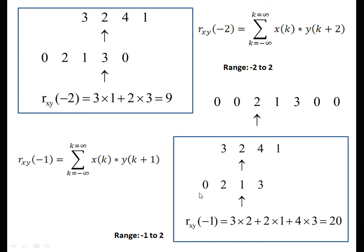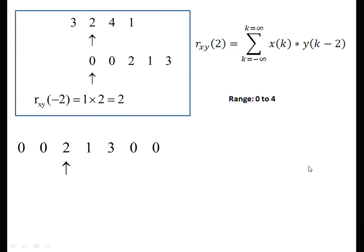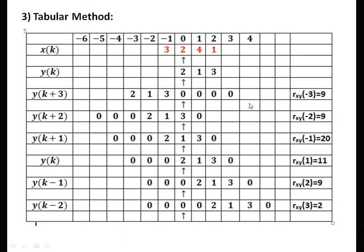Original signal gives answer 11. For the delayed version of y by 1 unit, shift arrow left by 1 unit — signal starts here. For delay by 2 units (1 and 2), signal starts with {0, 0, 2, 1, 3}. Corresponding element multiplication gives the full answer: R_xy = {9, 9, 22, 11, 9, 2}.